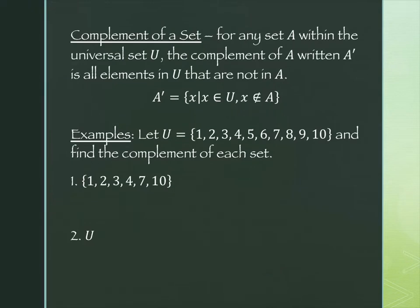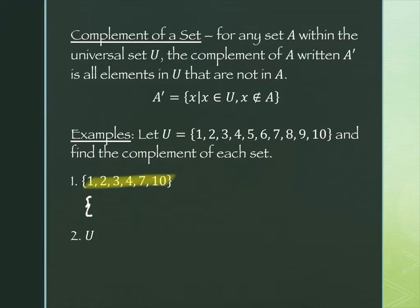Let's do an example where the universal set is simply the numbers from 1 to 10. All the numbers 1 through 10 are floating inside that box. The numbers inside the circle are 1, 2, 3, 4, 7, and 10. The directions want us to find the complement — that means all the numbers 1 through 10 that weren't just listed: everything that got left out. So I don't include 1, 2, 3, and 4, but I would include 5 and 6; 7 is already there, so 8 and 9.